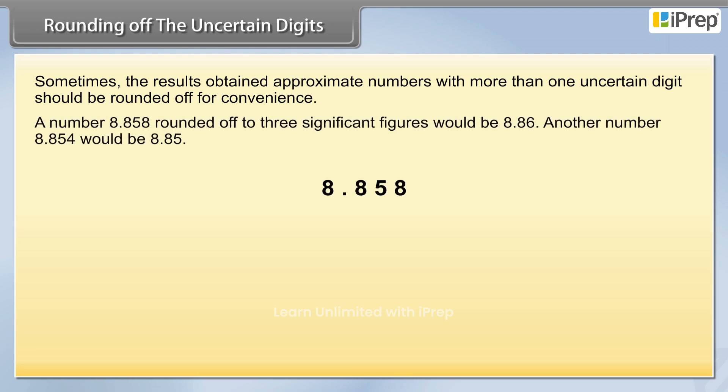A number 8.858 rounded off to three significant figures would be 8.86. Another number 8.854 would be 8.85.